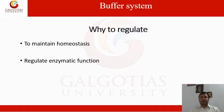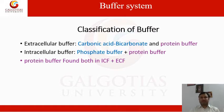Why do we need to regulate buffer solution? The buffer solution is used to maintain homeostasis and to regulate enzymatic function. Buffer can be classified in two ways: extracellular buffer and intracellular buffer. Extracellular buffers include carbonic acid-bicarbonate buffer and protein buffer, while intracellular buffer consists of phosphate buffer and protein buffer. Protein buffer is considered both extracellular and intracellular.